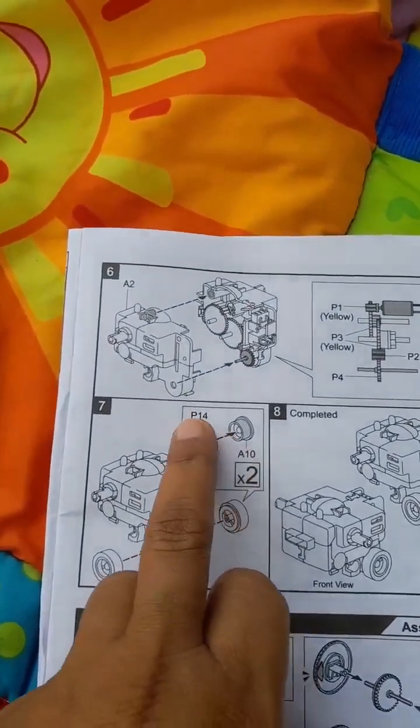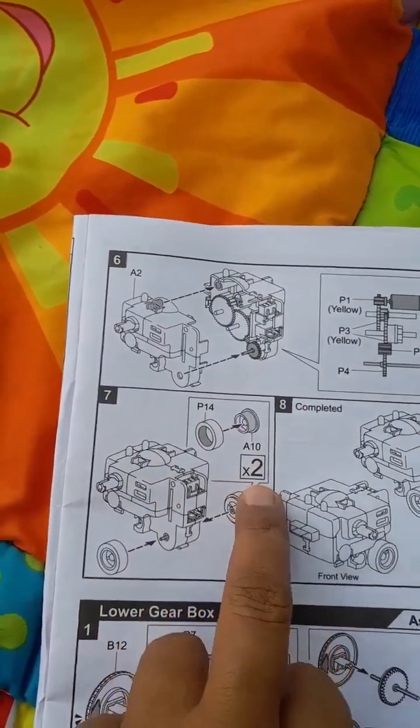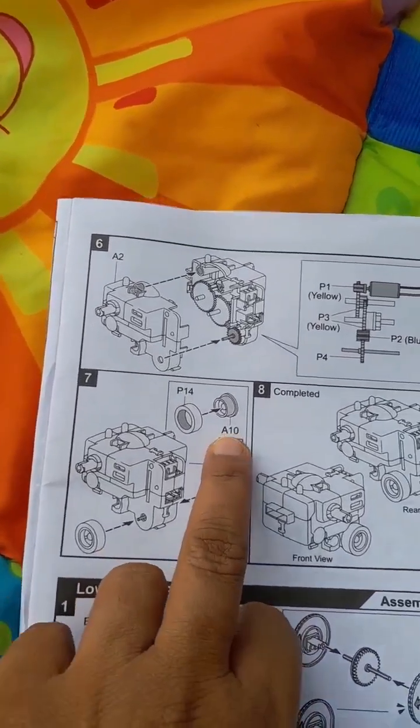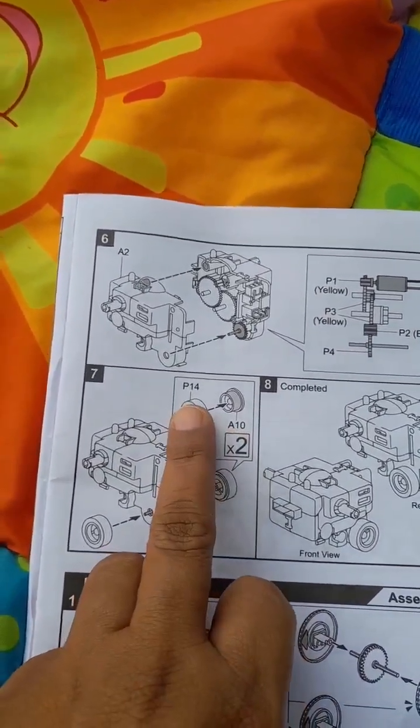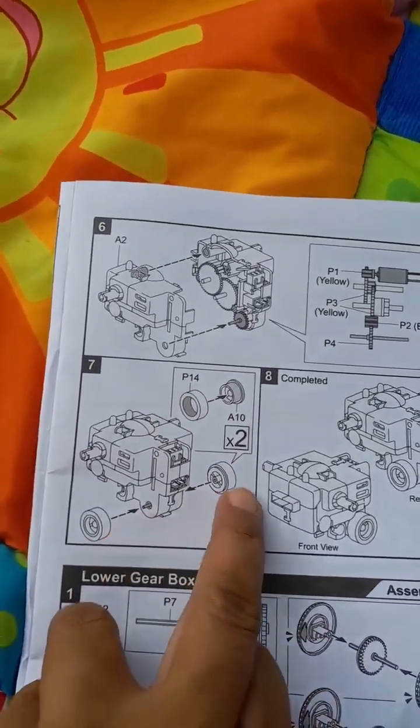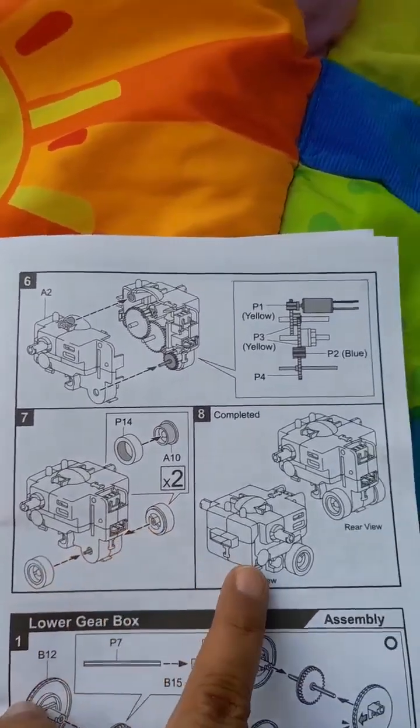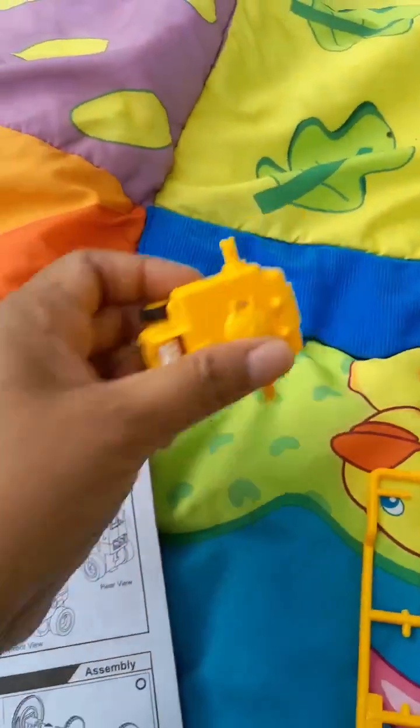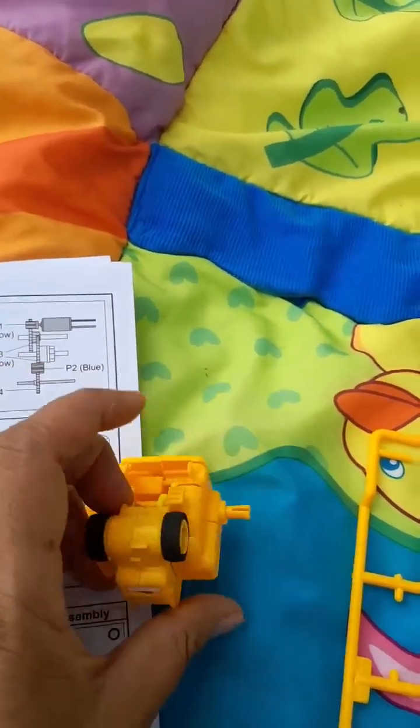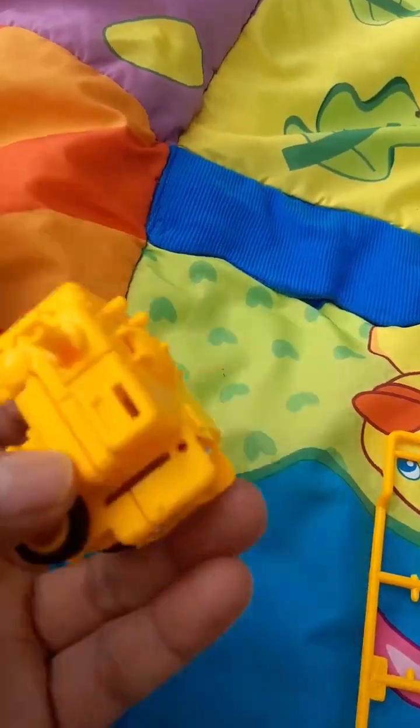Take the A10 from the yellow board, and P14 are the mechanical parts which come separately. Now make these types of wheels and attach them here, so like this. This assembly is created. This is the upper gear box.